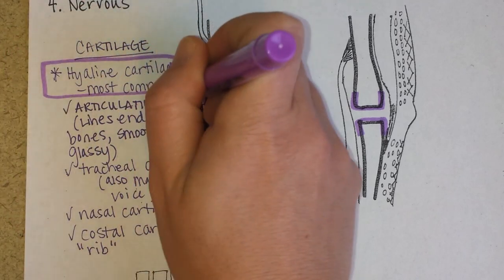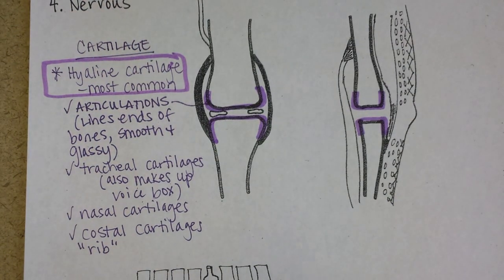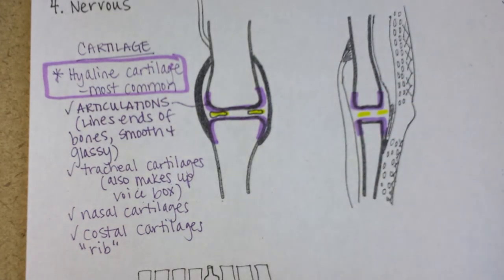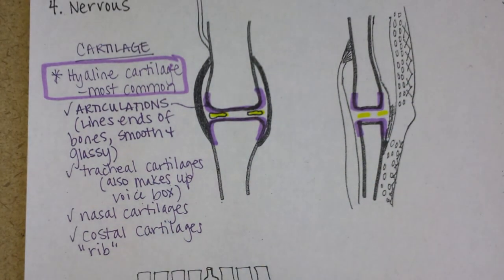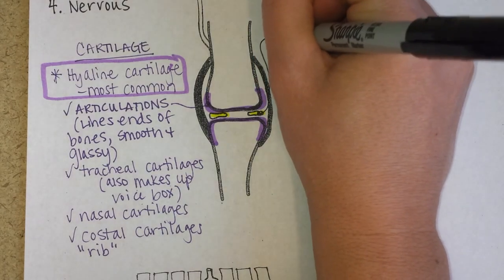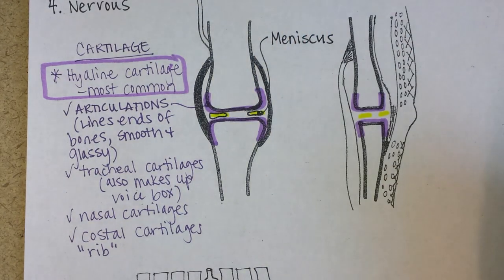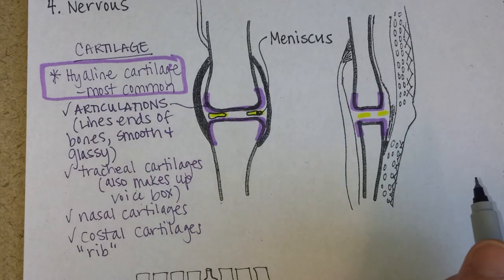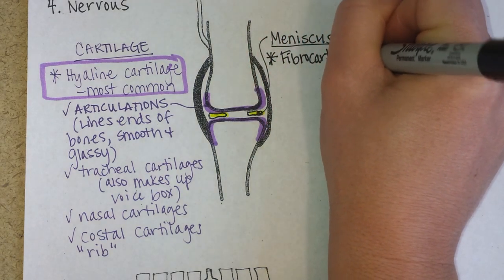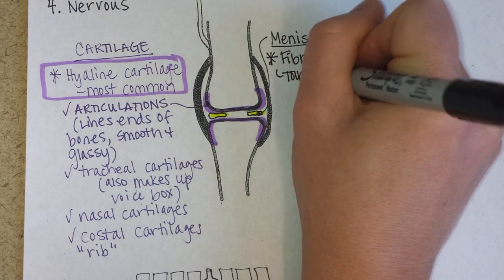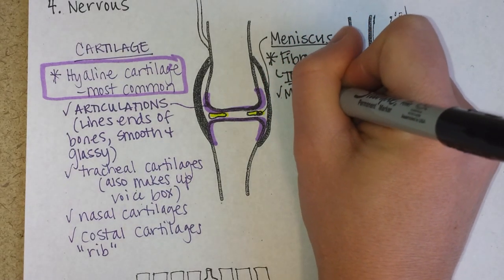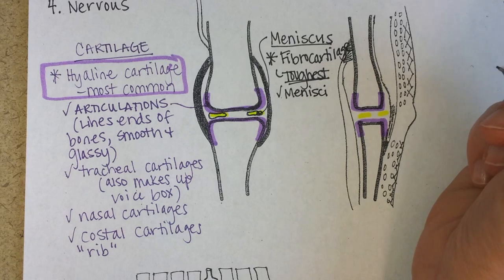Hyaline cartilage is the most common, but it's not the only kind. You can see in this imaginary knee joint a couple of pads — called fibrocartilage pads. In typical terminology we call this a meniscus. Maybe you've heard of someone who has torn their medial or lateral meniscus in their knee — what they've really torn is a piece of fibrocartilage. This is the toughest of the cartilages, the least flexible, but it gives good padding. You find it in the meniscus of the knee to act as cushioning and shock absorption.